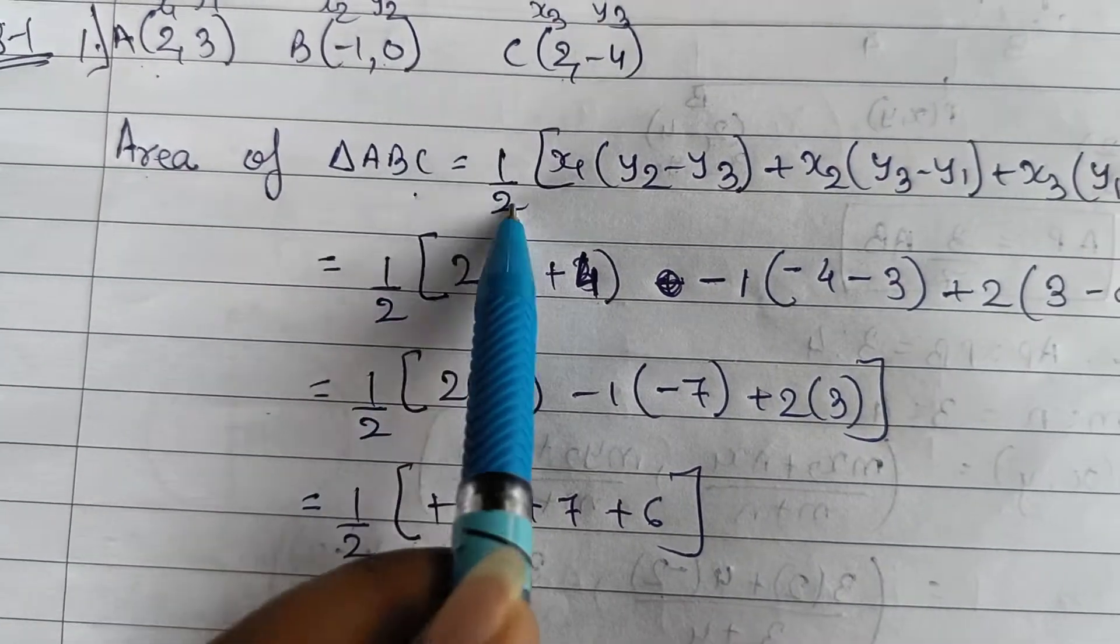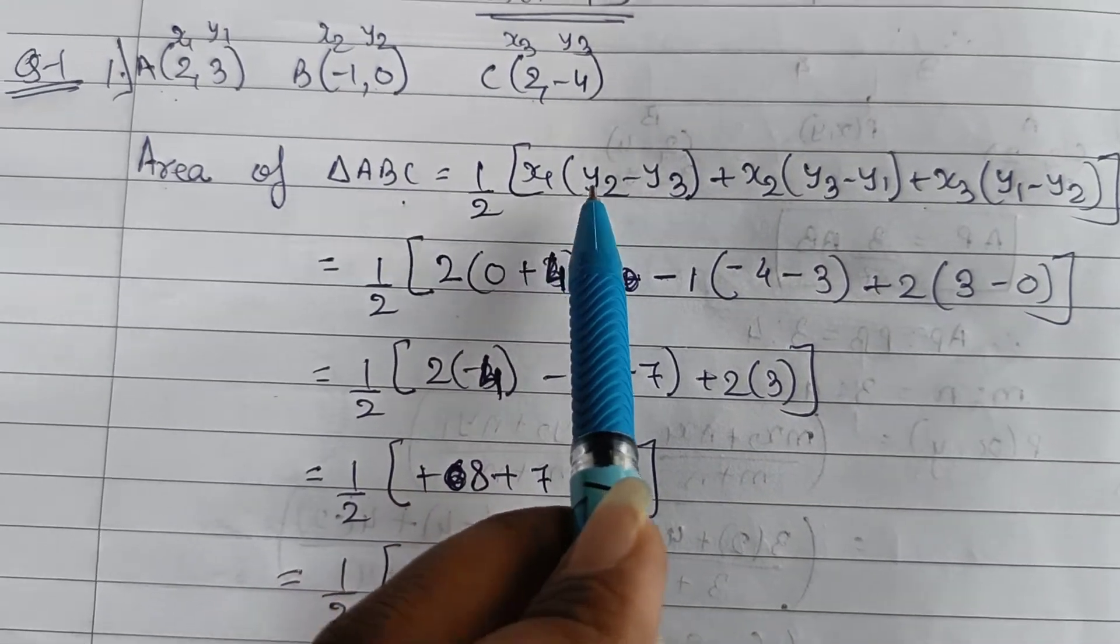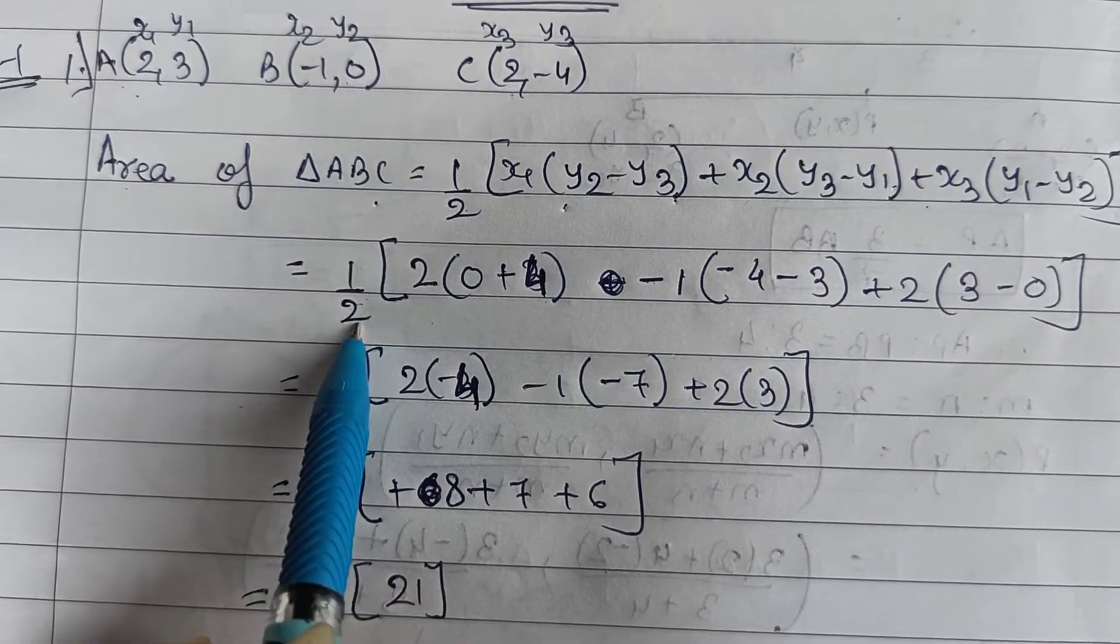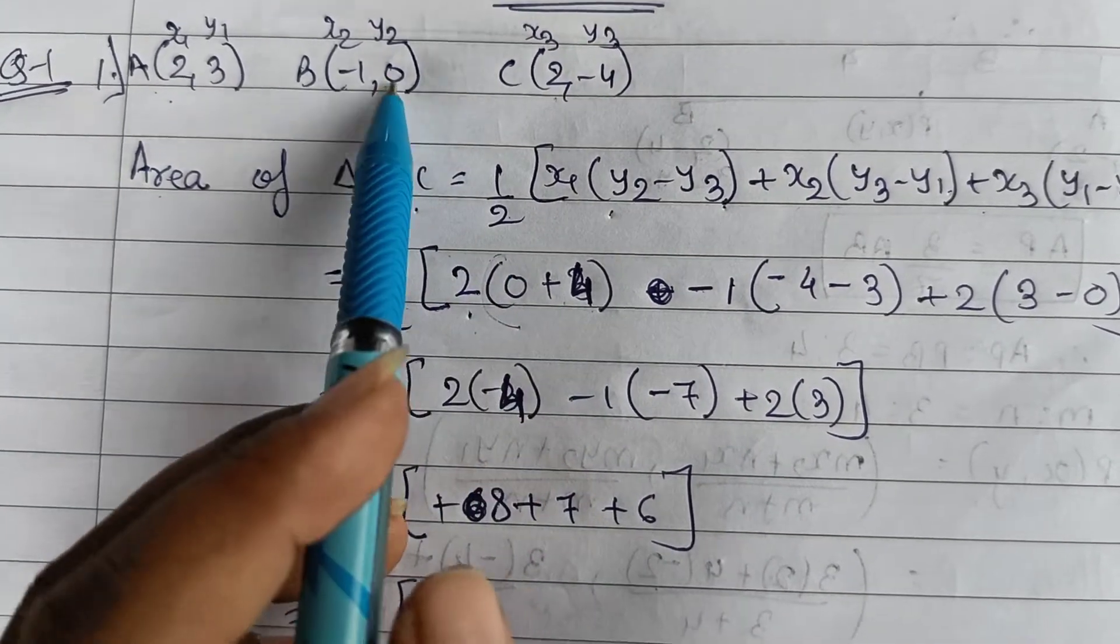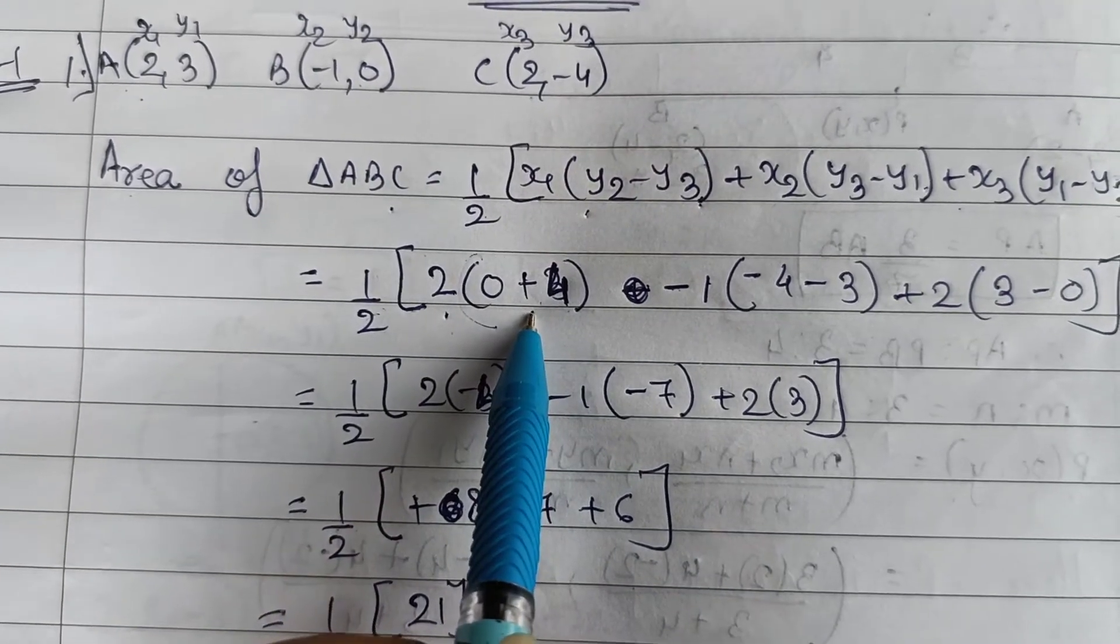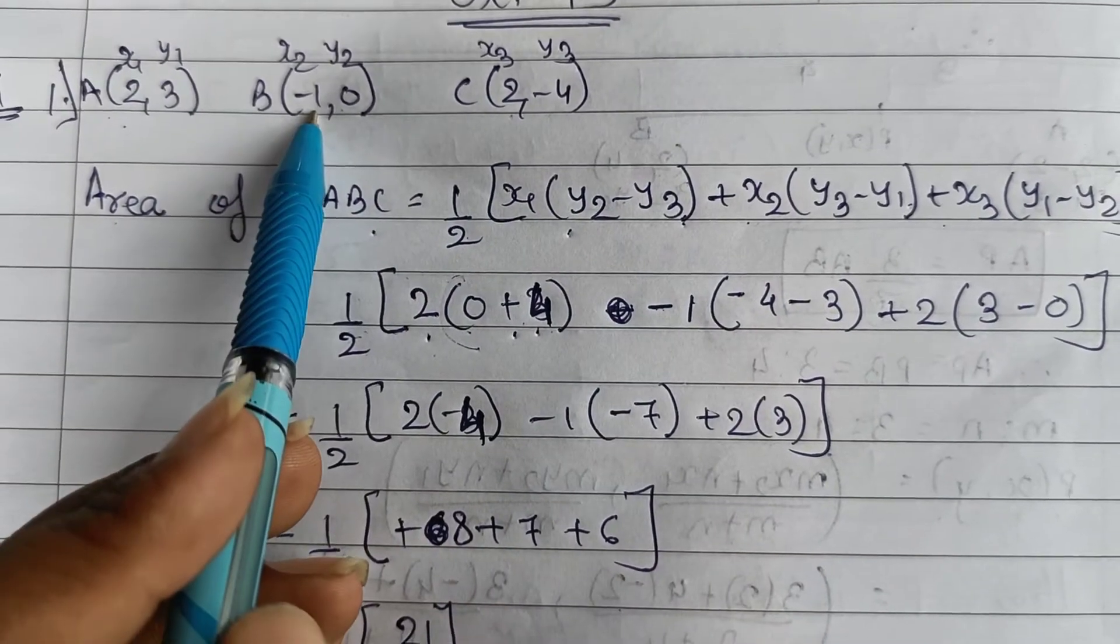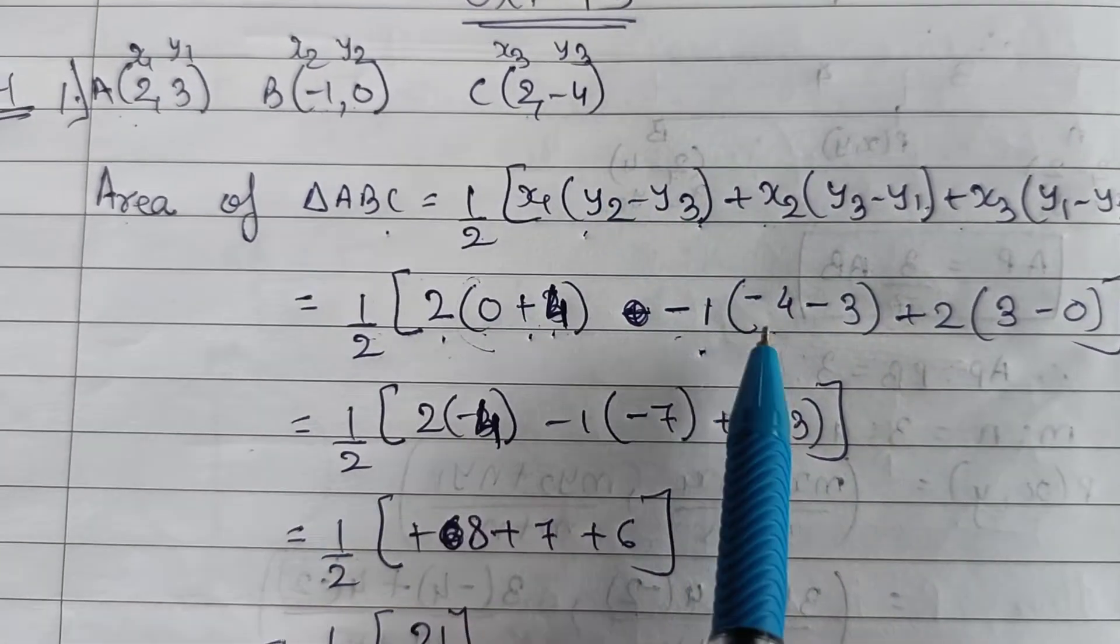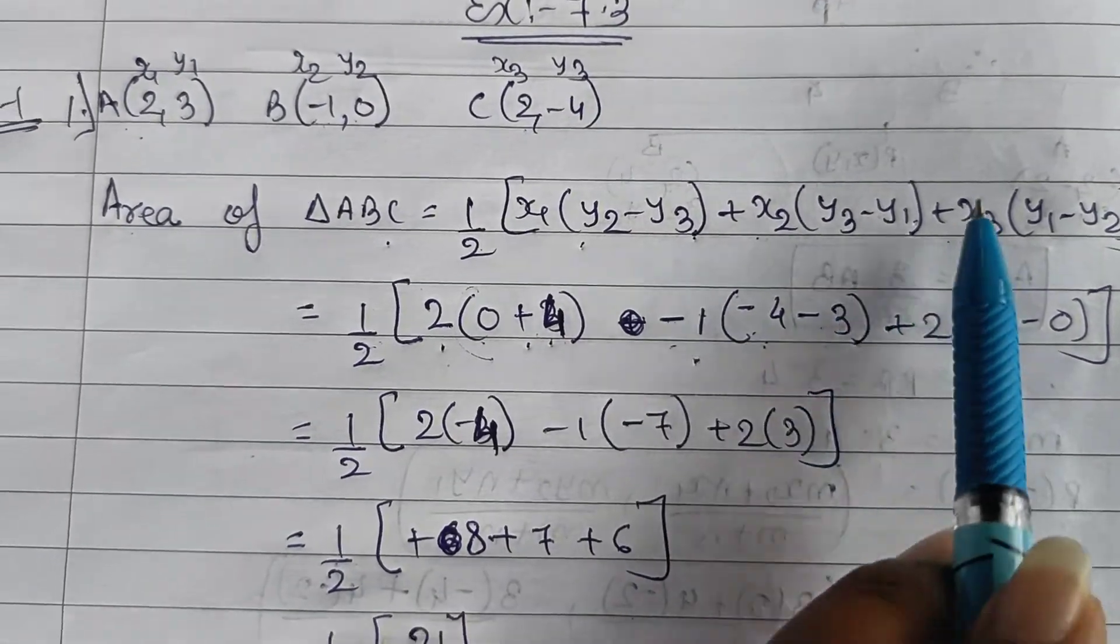Now for finding area of triangle you will have this formula. Apply this formula directly. That is half into x1 y2 minus y3, plus x2 y3 minus y1, plus x3 y1 minus y2. You will have half of x1 is what here? x1 is 2, so 2 into y2 is what? y2 is 0 minus y3, so minus of minus 4 it will be plus 4, so 0 plus 4. And it is plus x2, now plus x2 but here it is minus, so plus minus will be minus. So it will be minus 1, y3 is minus 4 and minus y1, y1 is 3, so it is minus 4 minus 3 plus x2.